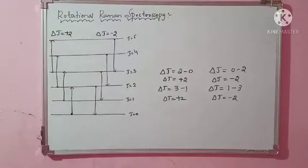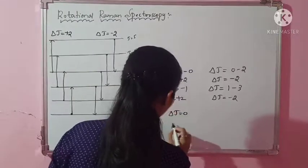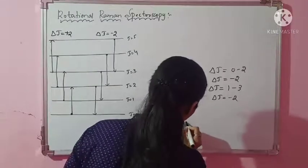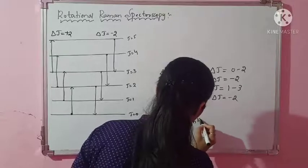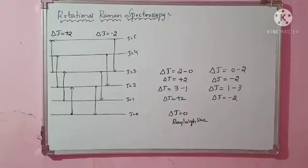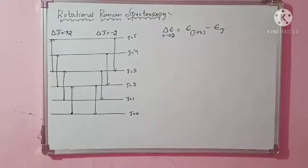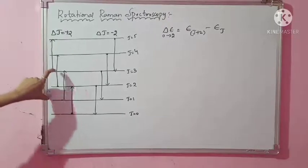For ΔJ = 0, there is no change in energy between the two levels, so the difference ΔE = 0. These transitions correspond to the Rayleigh line, shown in the center of the spectrum. All other transitions with ΔJ ≠ 0, ±2 are forbidden.